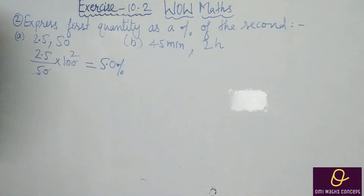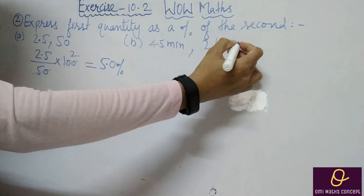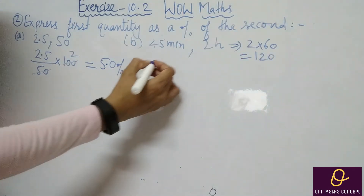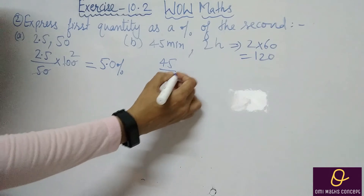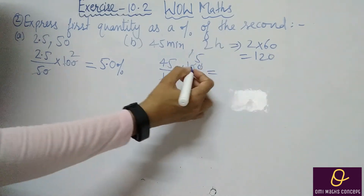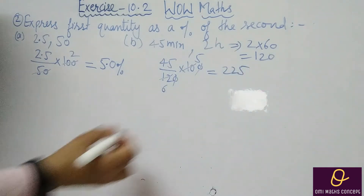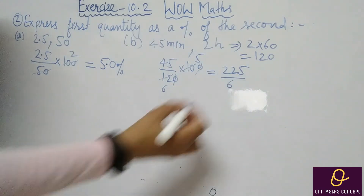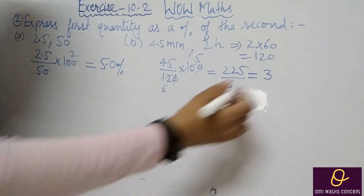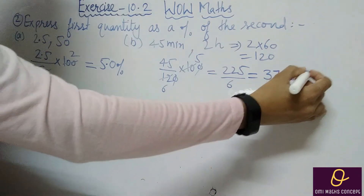In Part B, we have minutes and hours. First we will convert both to the same unit. 45 minutes and 2 hours: 2 hours = 2 × 60 = 120 minutes. So 45 divided by 120, into 100. After cancellation, 45 × 5 = 225 divided by 6. Dividing: 6 threes are 18, remainder 45, 6 sevens are 42, remainder 3, giving 37.5%.